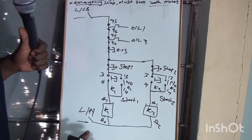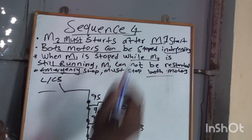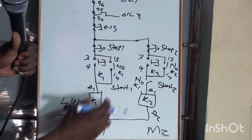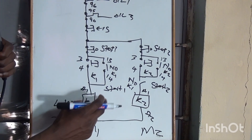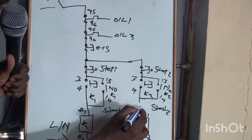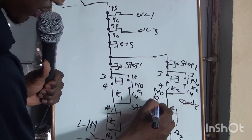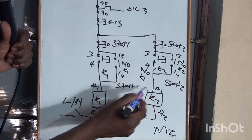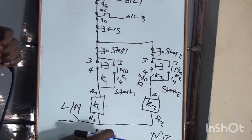This is the direct online for both sides. This side is for Motor 2 and that side is for Motor 1. The first statement says Motor 2 must start after Motor 1. So what we do is introduce a normally open contact of K1 on the Motor 2 side. When the K1 coil energizes, this normally open becomes normally closed, allowing you to start Motor 2. If you stop Motor 1, Motor 2 won't stop, and if you stop Motor 2, Motor 1 won't stop — they are independent.